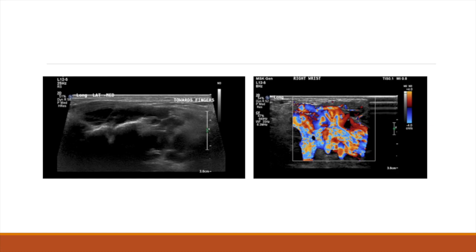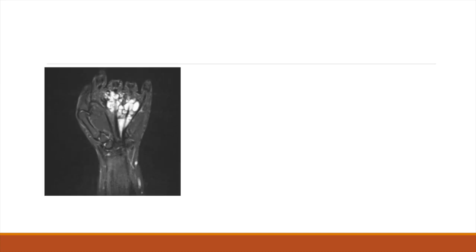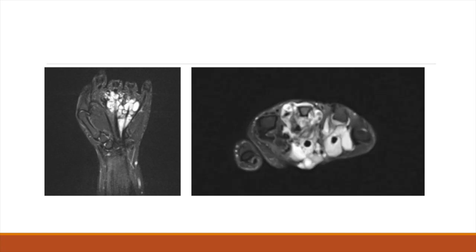For our last example, you can see this vascular anomaly is again composed of hypoechoic channels. When we apply color Doppler, we see very high flow within the anomaly. This high flow is consistent with an arteriovenous malformation. The MRI imaging demonstrates a T2-enhancing malformation, and in the image on the right, we can see flow voids, which confirm that this is an arteriovenous malformation.